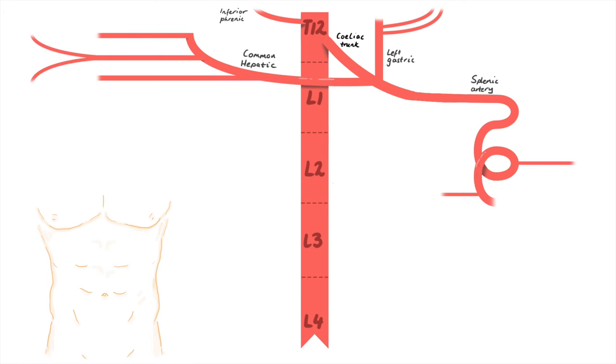Off the splenic artery, we have two main arteries that supply the stomach: the short gastric and left gastroepiploic arteries. Off the left gastric artery, we have branches to a structure that runs parallel to the aorta, then runs into the stomach. These are esophageal branches.